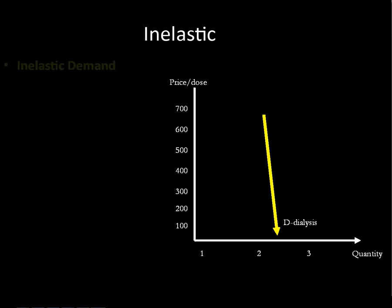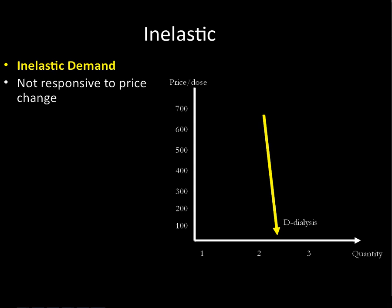Inelastic demand means that somebody is not very responsive to price change. Here we've got a product — or really a service — which is dialysis. Reading this graph, a person needs to get just over two doses of dialysis per week. They're willing to pay $100, $200, $300, $400 — right up here they're going to start to cut back just a little bit, but essentially they're going to get it. Without that process, this person would die. So that's a good example of inelastic demand.